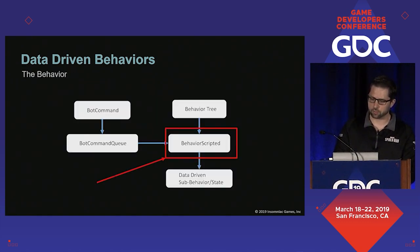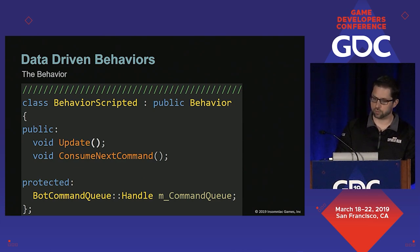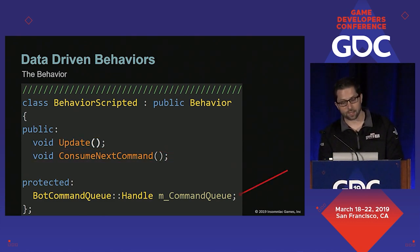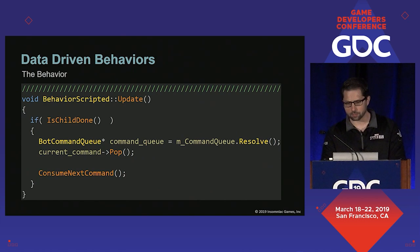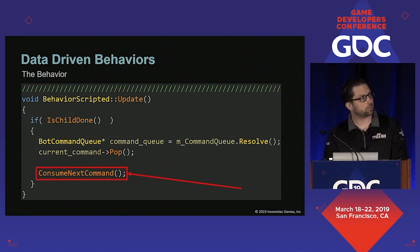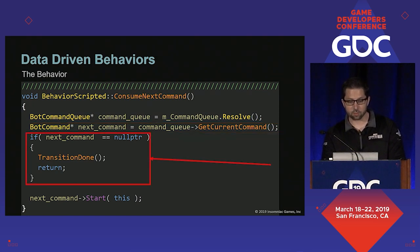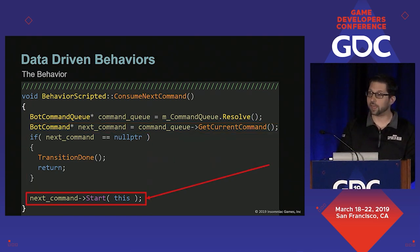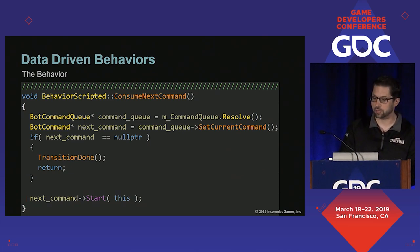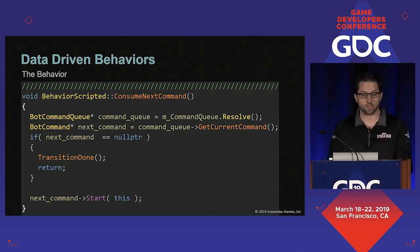Let's take a quick look at behavior scripted itself. If a bot command queue exists and has any commands in it, the behavior tree will instantiate this behavior. It has an update function, a consume next command function, and a handle to access the command queue. The behavior update is simple — if the current command is done, we pop it from the queue and try to consume the next one. The consume next command function checks to see if it has a command; if there is no command, we're done. But if there is one, then we tell that command to start and attach ourselves as the parent behavior. When the command is done, the previous update function will just call this function again, and we'll continue executing commands.